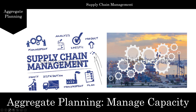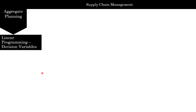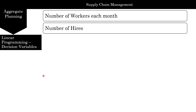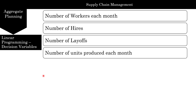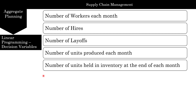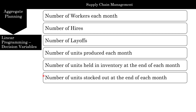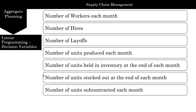So let's dive right in and start with the first step: what are our decision variables? These are things that the computer, or as a manager, you need to decide. You have to figure out how many workers you need each month, how many people you're going to hire and how many you're going to lay off, how many units you need to produce each month, how many units are going to be held in inventory or whether you're going to have a stockout or back order, and finally how many units are subcontracted.